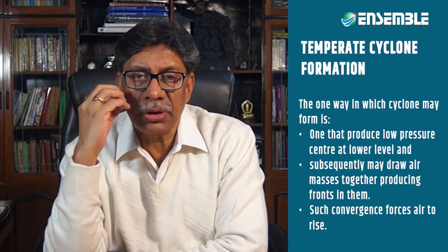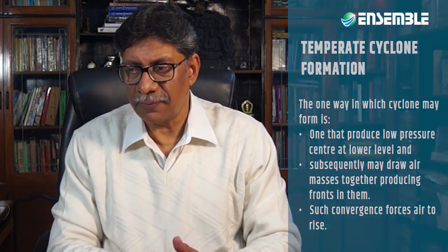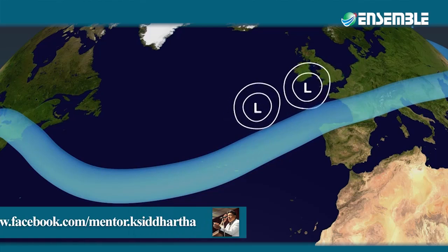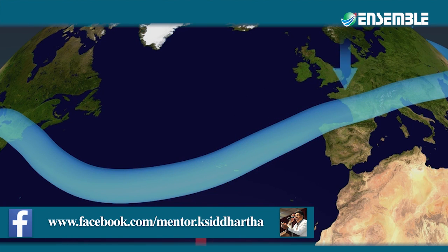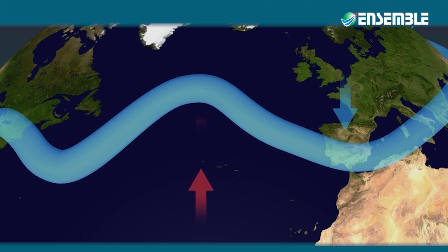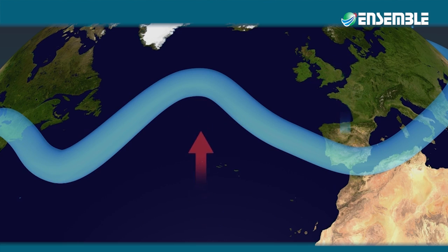This low pressure center draws air masses together, leading to front formation. Such convergence forces air to rise. As the low pressure forms, it draws air from different sides, allowing a front to form. That convergence forces the air to rise, creating instability. Instability induces the rise of warm air, aided by divergence and upliftment by the jet stream.